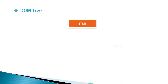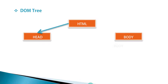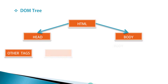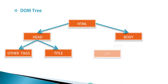You can also call HTML as the root element. In this DOM tree, we have two child nodes: head and body. Using the root element, you can access all the child nodes. In the head node, we have title, and in the body, we have HTML elements. It depends on you what you put inside the body and in the head.